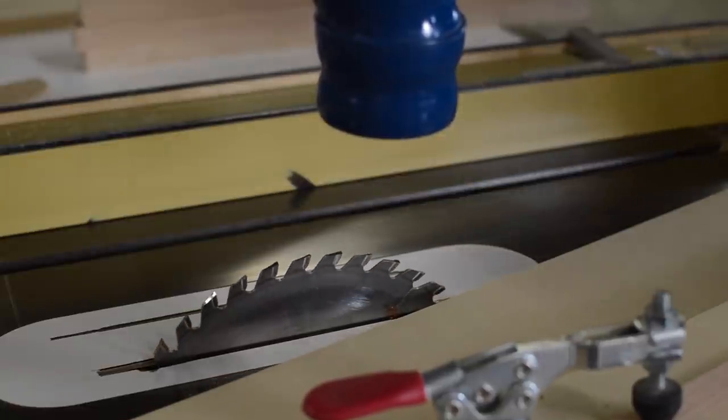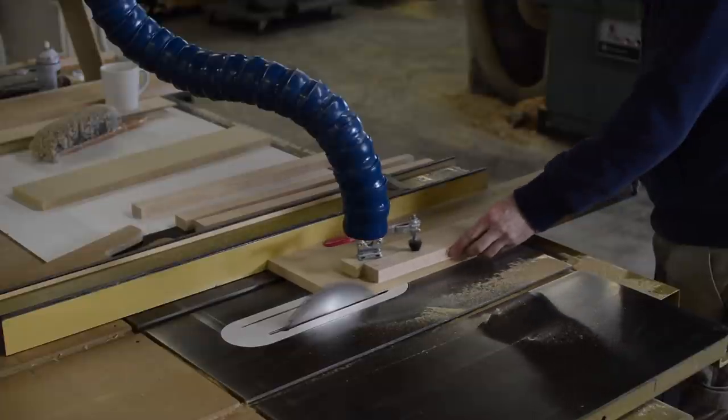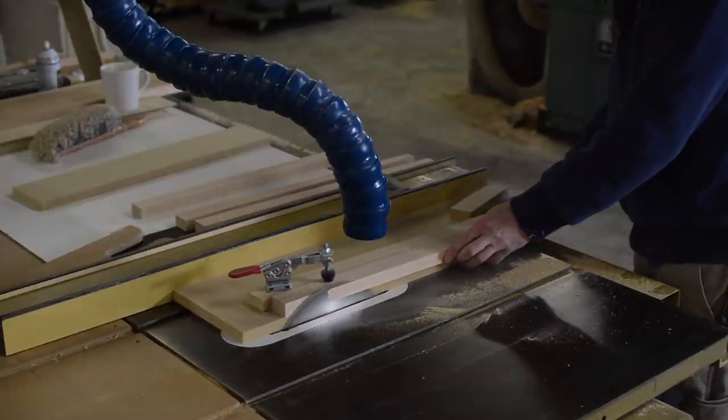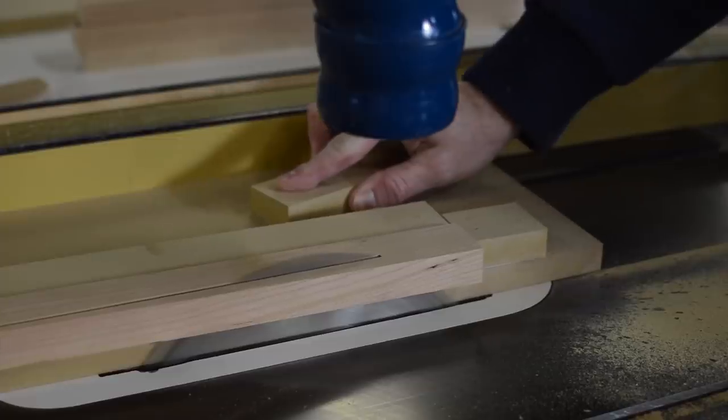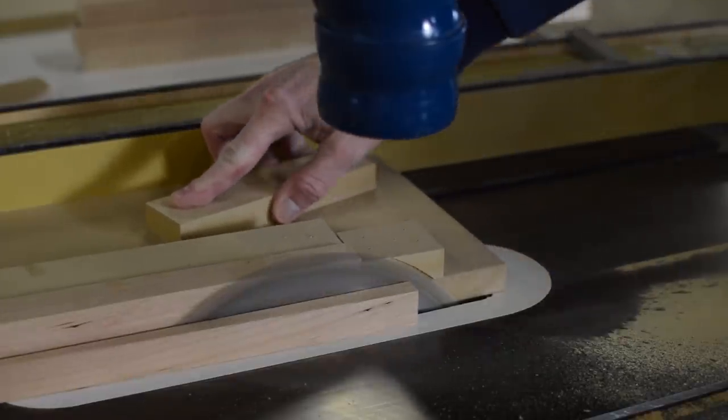Absolutely love making jigs like this. They only take 10 or 15 minutes to make, and what's cool about them is once I'm done using them, I can pull the clamp off, label it, hang it on the wall, come back to it, and I could make the exact same part several years down the road.